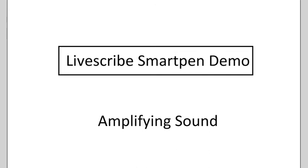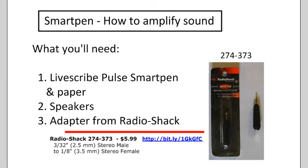So, what's needed? Well, you need a Livescribe Pulse SmartPen and paper, some speakers, and a special $6 adapter from Radio Shack. There's the part number and a short URL to Radio Shack's website for that part, or you can just go to RadioShack.com and type in that part number.